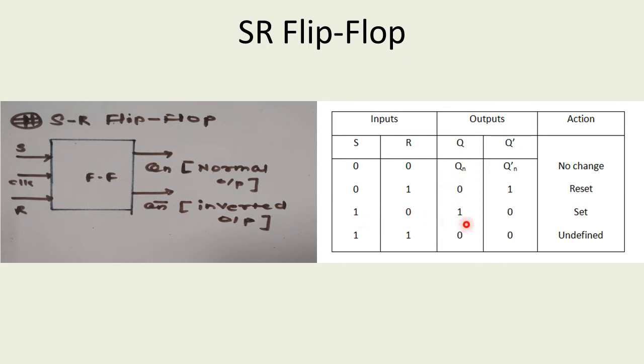When it is 10, Q is going to be 1 and its complementary will be 0. This is called set condition as Q or the normal output is set to 1.